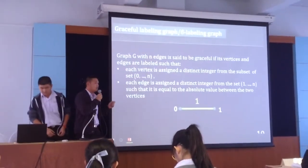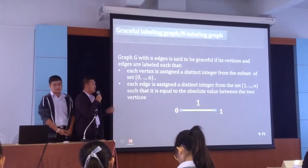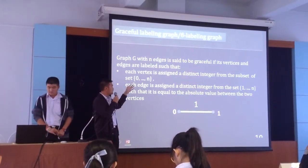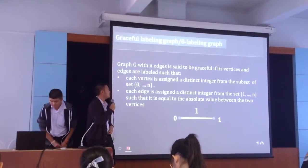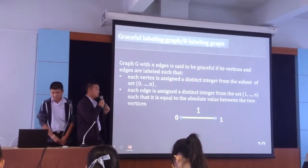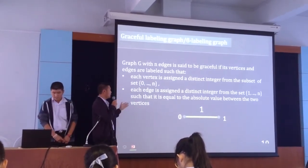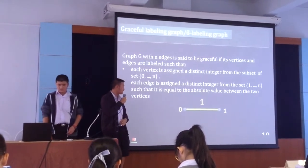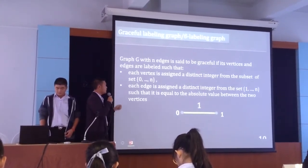Definition of graceful labeling graph: for example, we have graph G with vertices and edges. It will be a graceful labeling graph if its edges and vertices are labeled. We will assign vertices with distinct integers from the subset of set 0 to 2n, and assign edges with distinct integers from set 1 to n. That equals an absolute difference between two vertices.